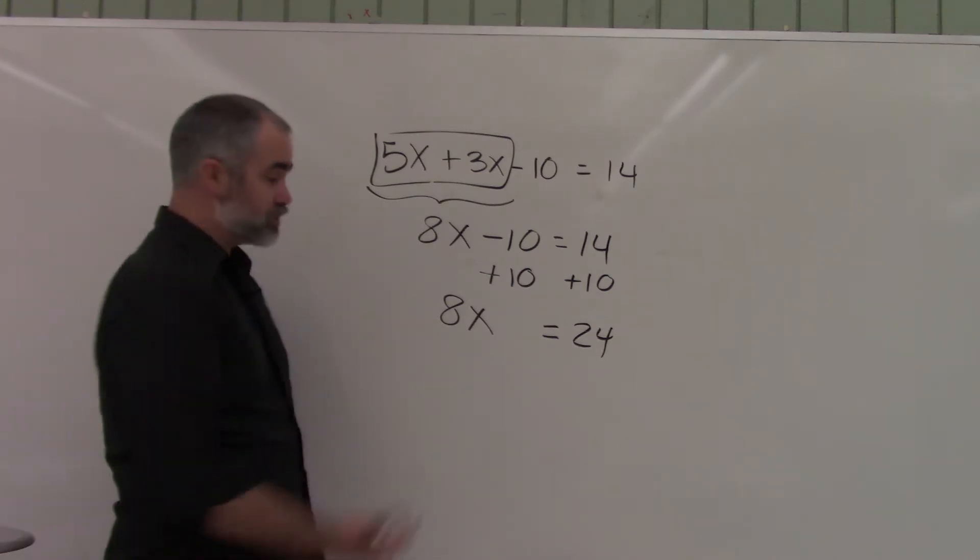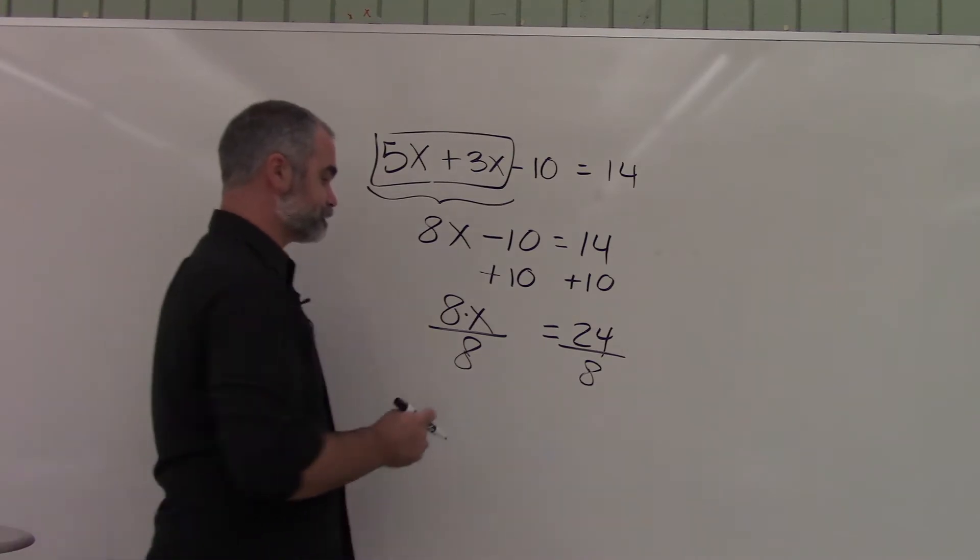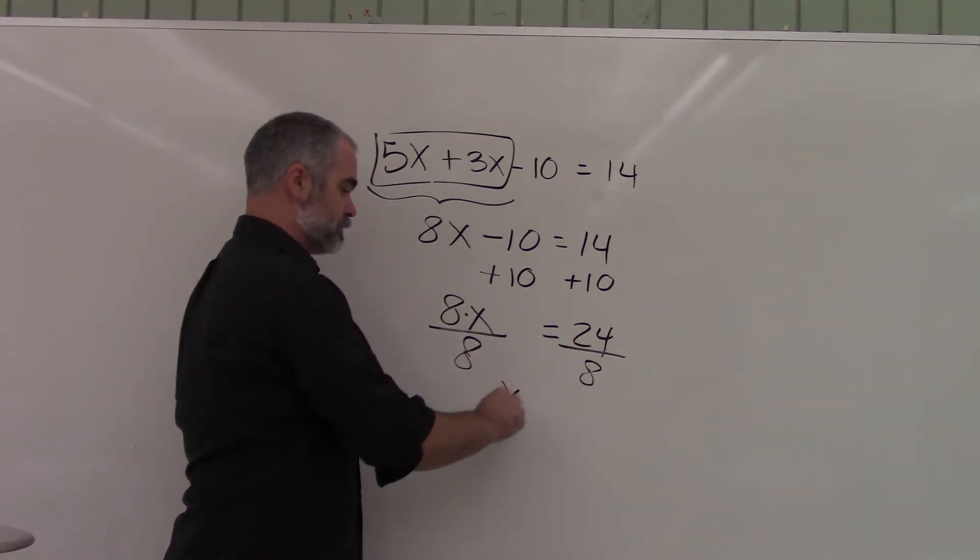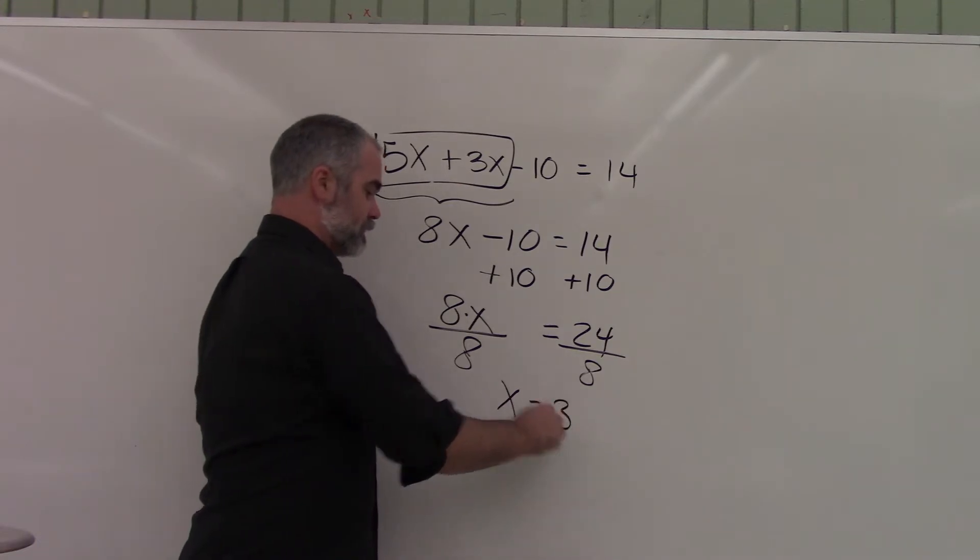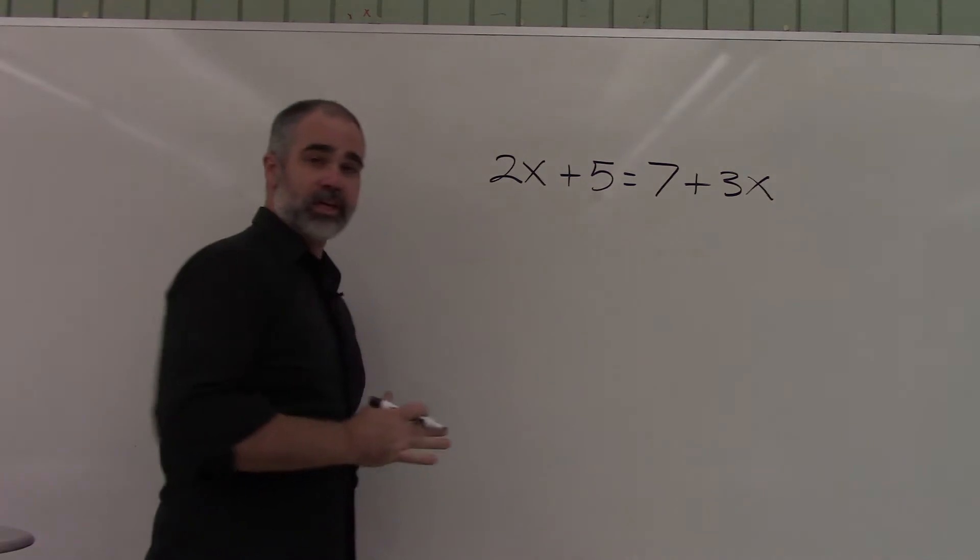This is multiplication, remember. Opposite of multiplication is division. Alright, so 24 divided by 8, that's just 3. Again, 8 divided by 8 is 1, but I don't need to write that down if I don't want to. But this can be a little bit more challenging.